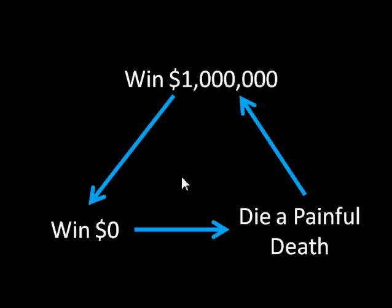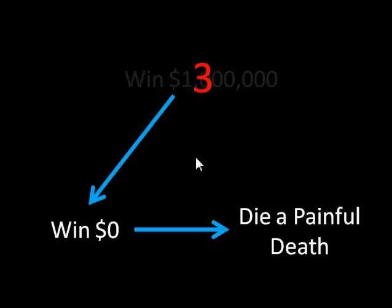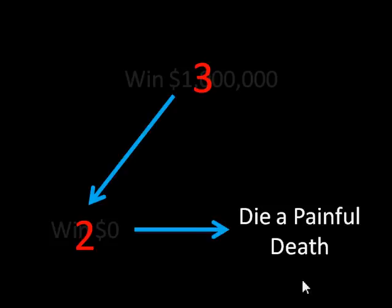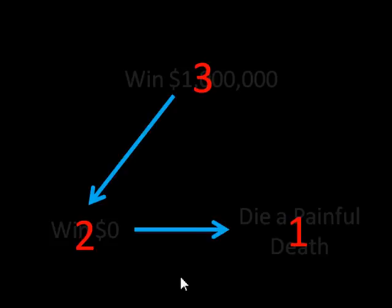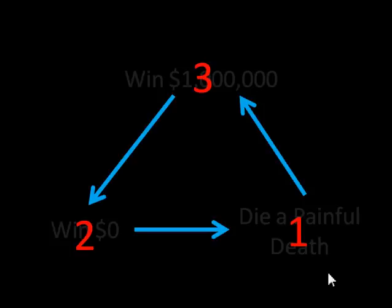The reason this causes huge problems when we're trying to solve game theoretical models is that eventually we need to assign expected utilities to all of these outcomes. Let's start at the top and call winning a million dollars a three. If this person prefers winning a million dollars to winning zero dollars, whatever expected utility we assign there has to be less than three — so let's call it two. If they prefer winning zero dollars to dying a painful death, that utility must be less than two, so maybe it's one. But if they display this preference cycle, then the utility for dying a painful death has to be greater than three, which is obviously not true. Whatever expected utility we assign there must simultaneously be less than two but greater than three — and no number satisfies that. That's why we can't have intransitive preferences in our models.